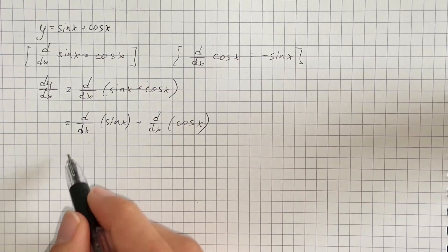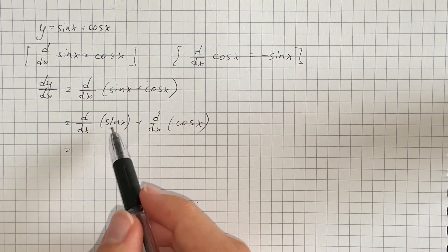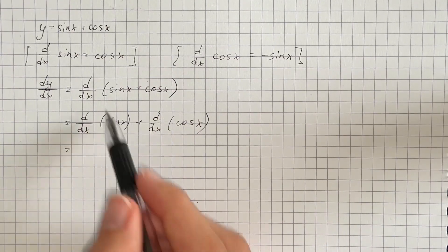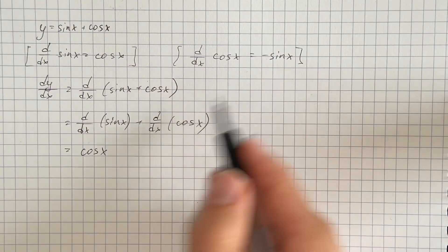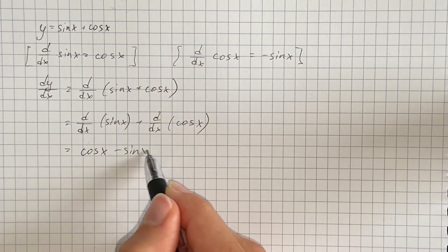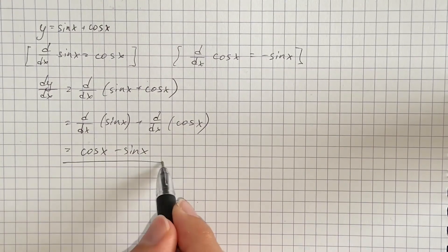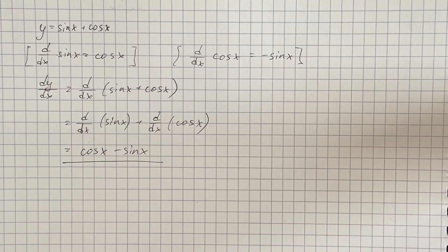Therefore, the derivative of sine of x equals cosine of x, and the derivative of cosine of x equals negative sine of x. So the final answer is cosine of x minus sine of x, and that's the derivative of the given function.